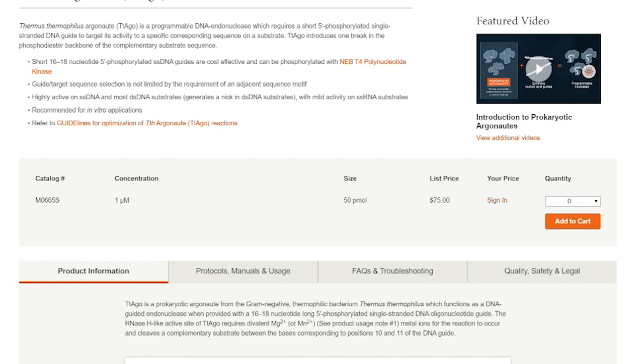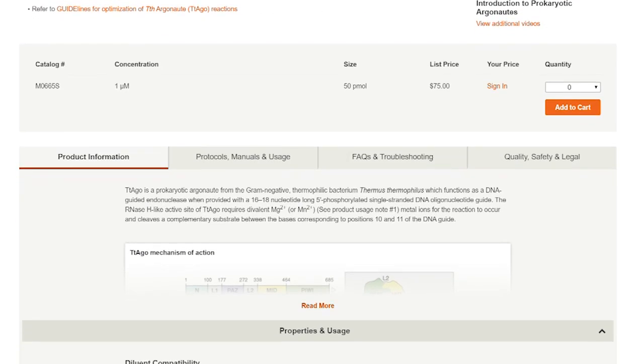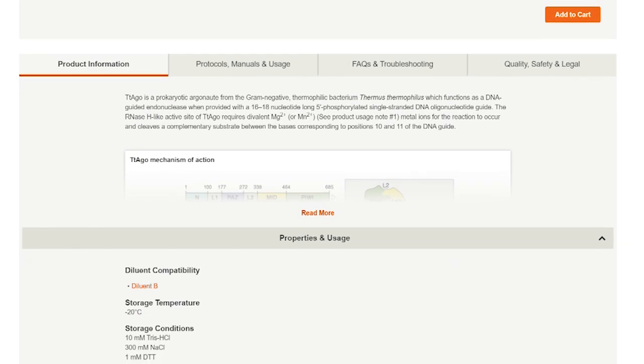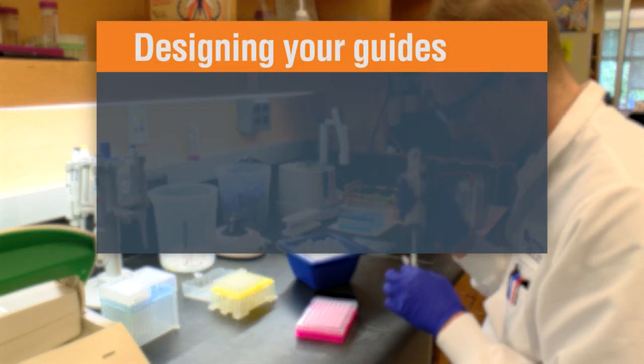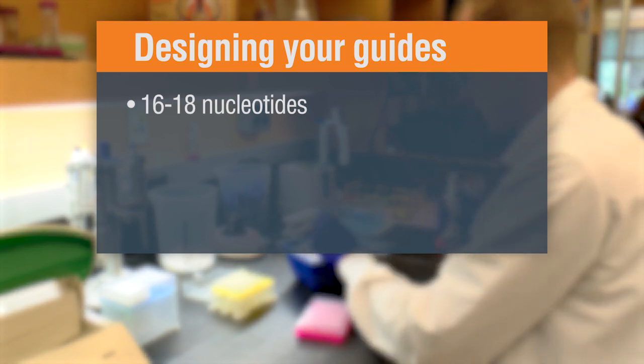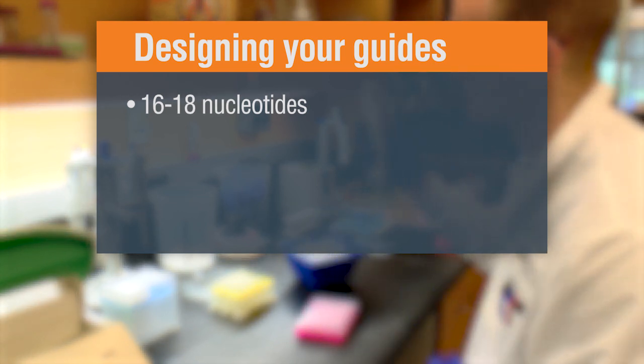So Eric, how does one go about designing guides? The design process for a guide is pretty easy. We've worked hard to put up FAQs and guidelines to help users along, but they're simply short 16 to 20 nucleotide guides. We recommend 16 to 18 nucleotides for the best activity. They're single-stranded DNA oligos with a 5' phosphate.